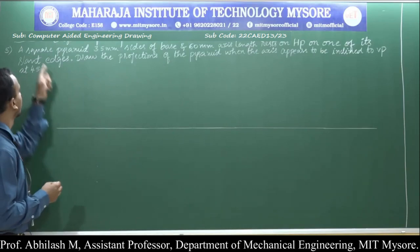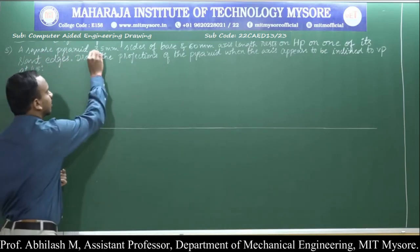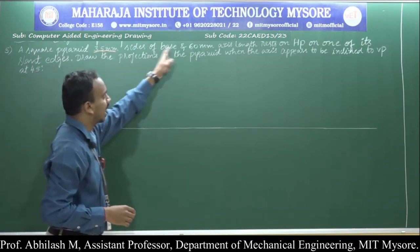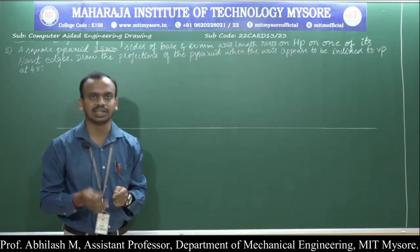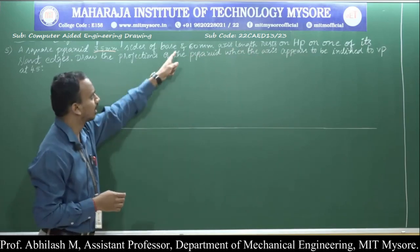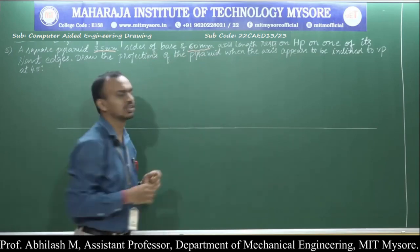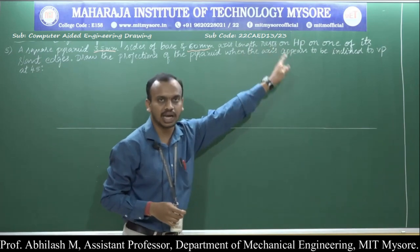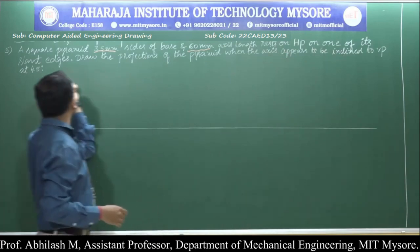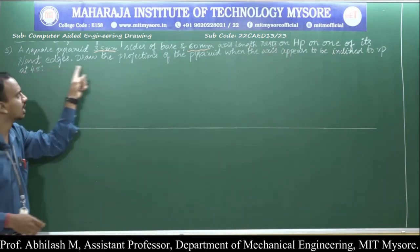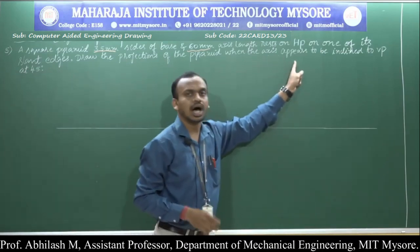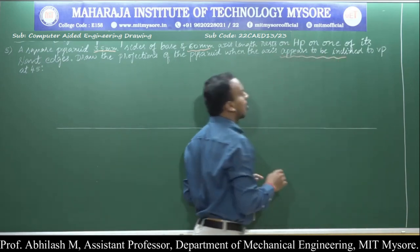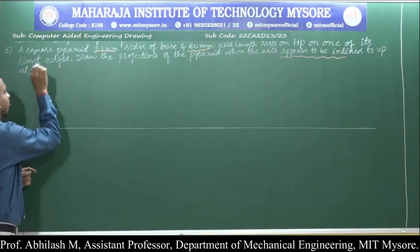The problem statement states: a square pyramid of 35 millimeter sides — each side of the square base is 35 millimeter — and 60 millimeter axis length. The height or axis of the solid is 60 millimeter. It is resting on HP on one of its slant edges. Draw the projections of the pyramid when the axis appears to be inclined to VP at an angle of 45 degrees.